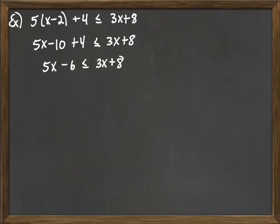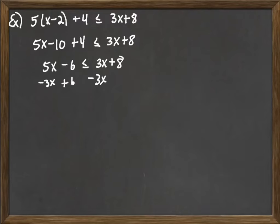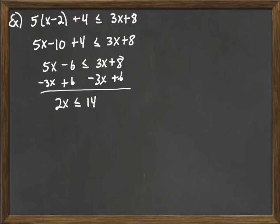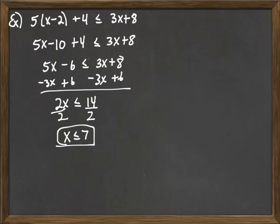At this point we want our variable onto one side, so we go ahead and subtract off the 3x and move the 6 to the other side. Simplifying: 5x minus 3x is 2x, the 6's cancel out, the 3x's cancel out, and 8 plus 6 is 14. So we have 2x less than or equal to 14. We divide both sides by 2, and because we divided by a positive number, we do not change the direction of the inequality. It stays as x less than or equal to 7.